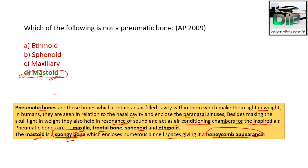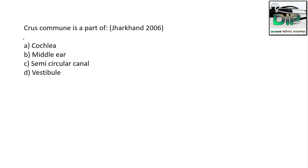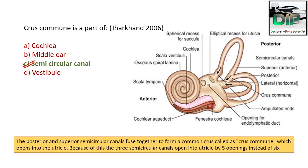Next question. The crus commune is part of: Option A cochlea, Option B middle ear, Option C semicircular canal, Option D vestibule. The correct answer is semicircular canal. Looking at the picture, there is a superior or anterior semicircular canal, a posterior semicircular canal, and a lateral or horizontal semicircular canal. The anterior and posterior semicircular canals fuse to form a common crus known as the crus commune, which opens into the utricle. Because of this, the three semicircular canals open into the utricle by five openings instead of six.